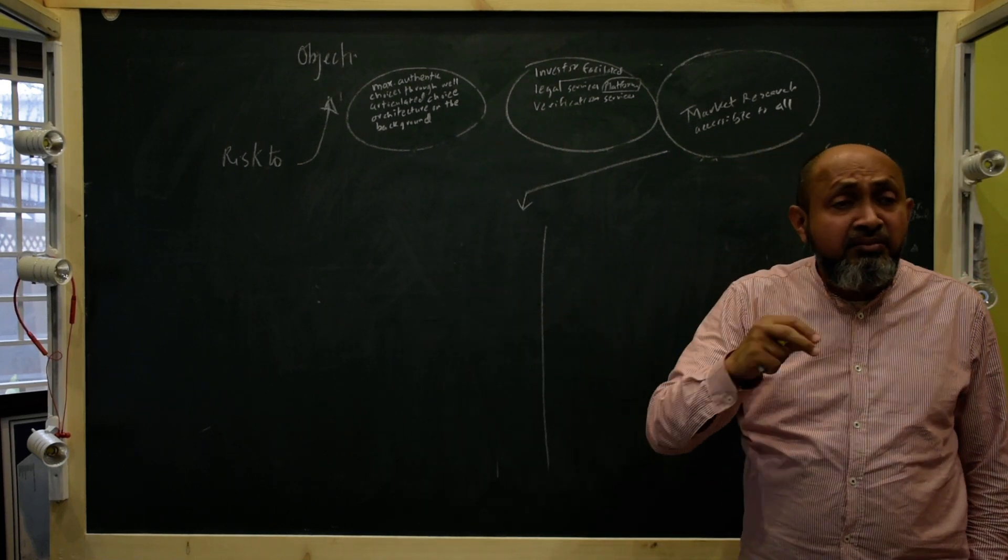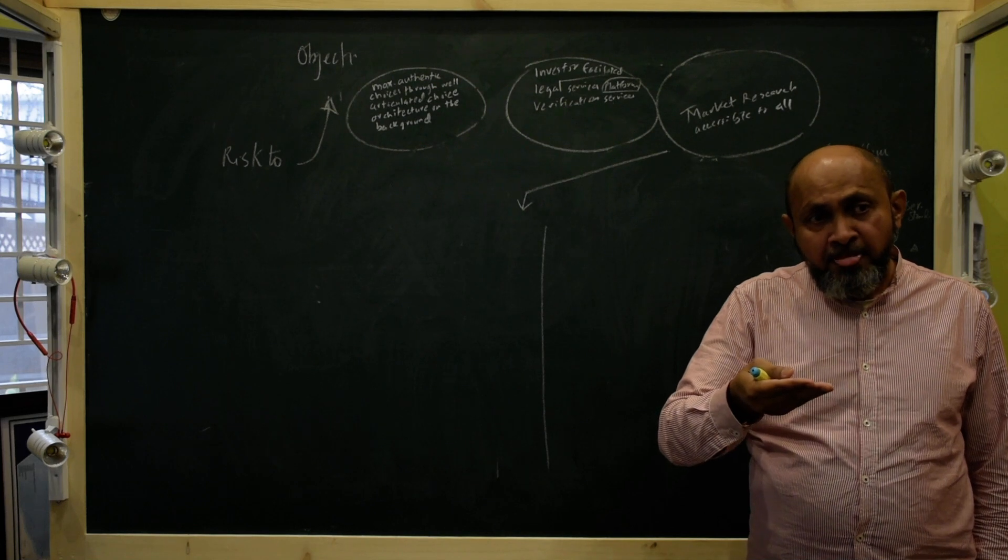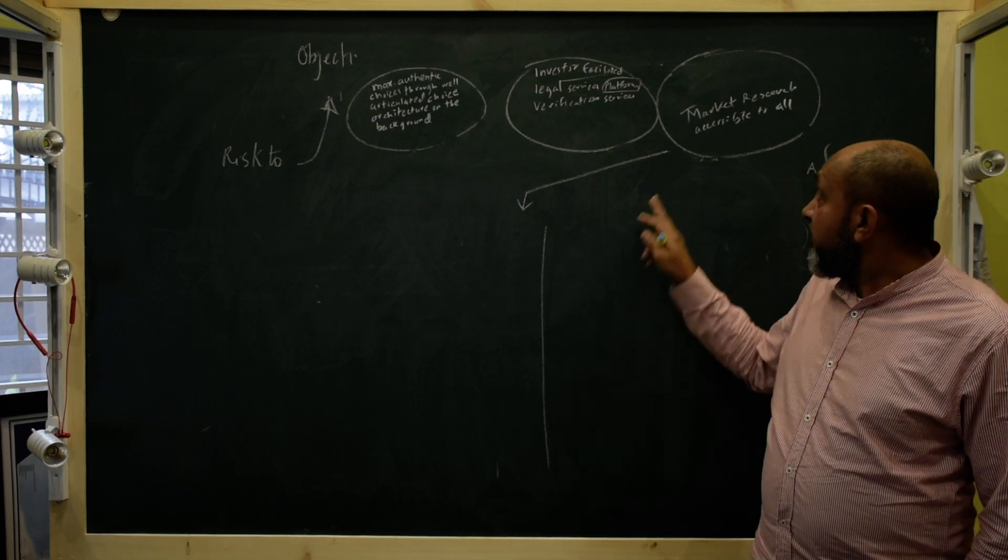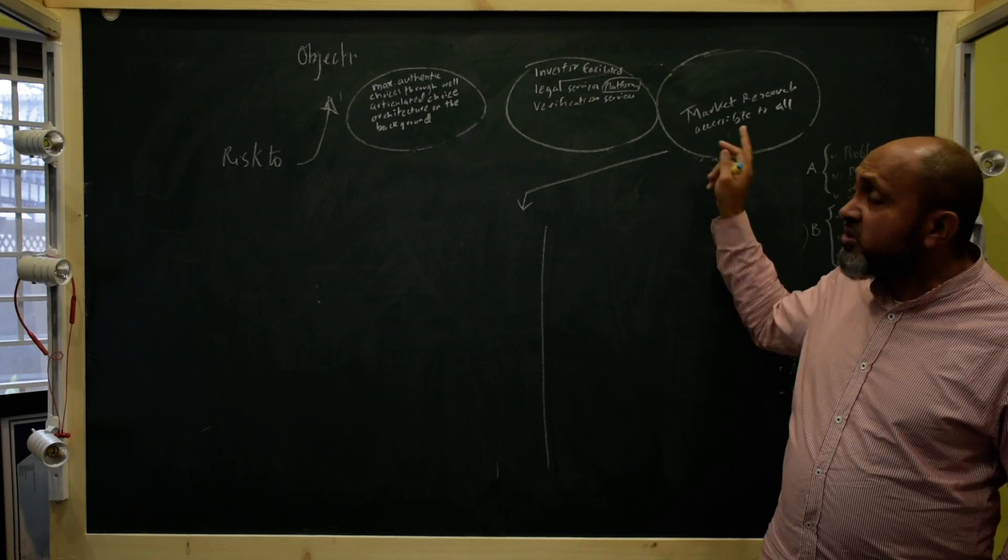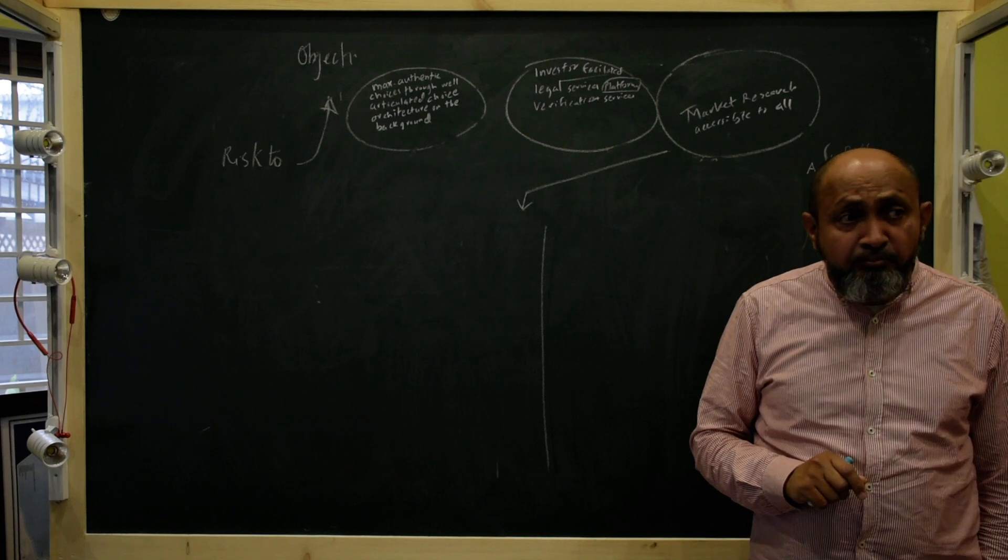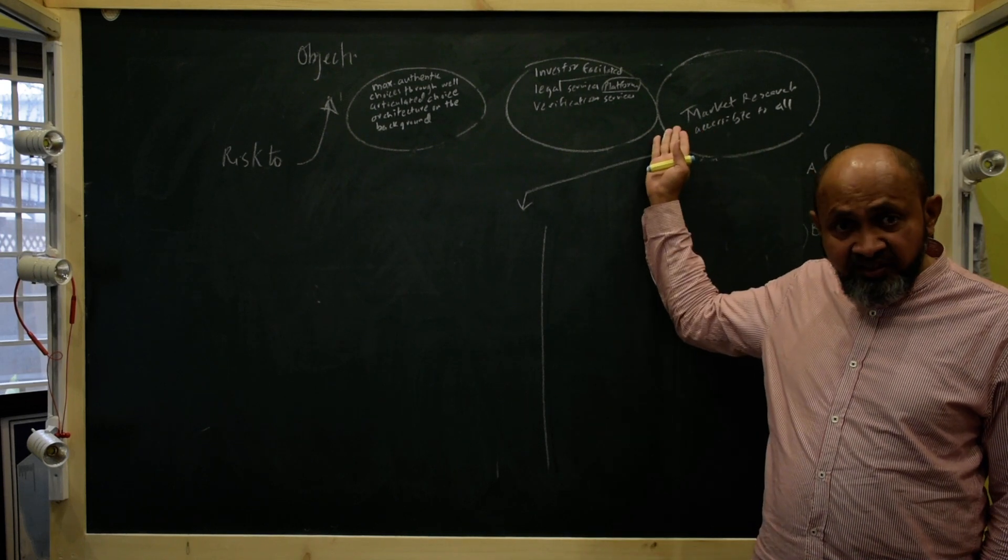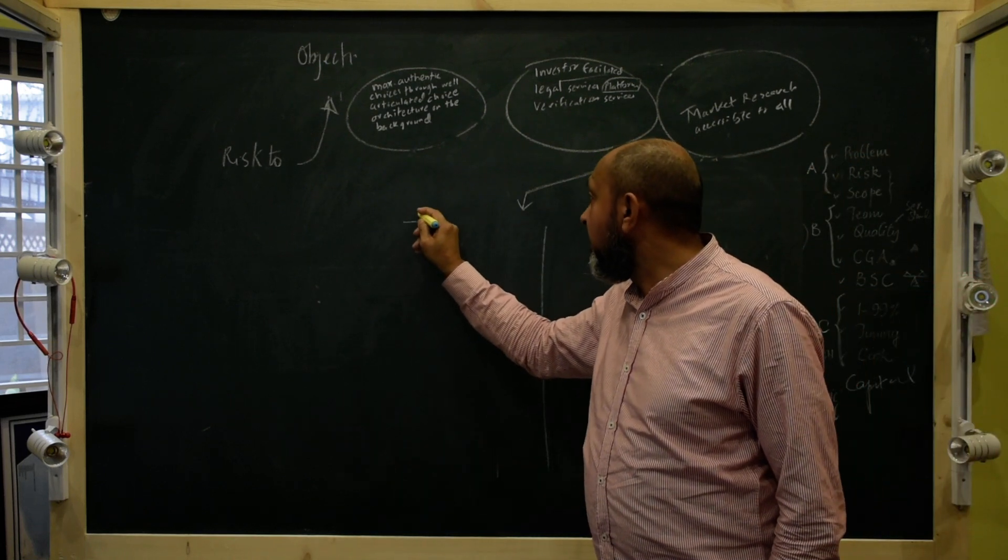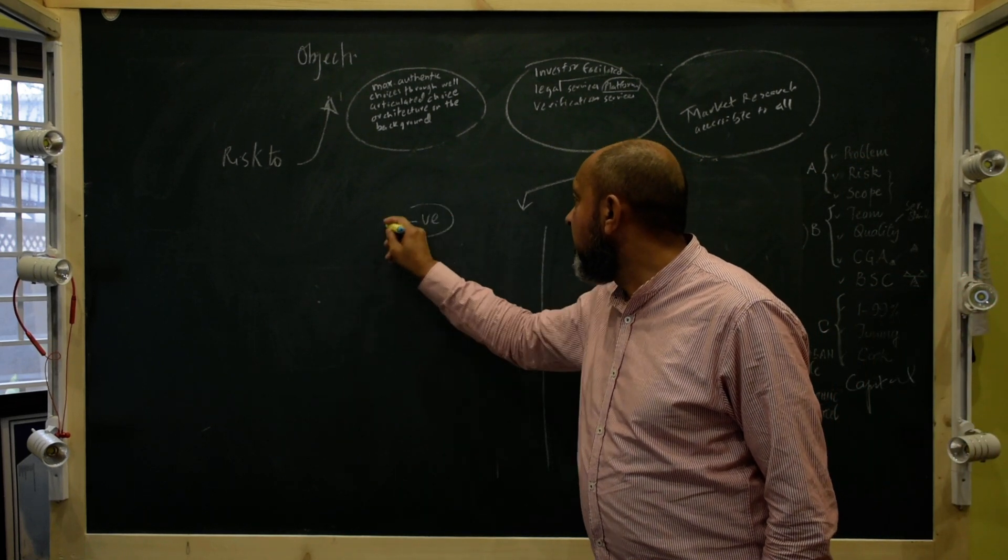In fact, risk management is objective management. There is a name of risk management. So you have to see, what can possibly come? What can possibly come which might impact this thing negatively or positively.